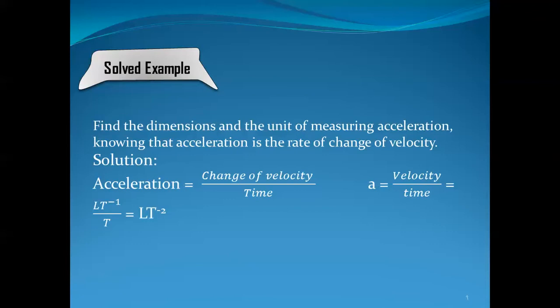Velocity equals displacement over time. Displacement has dimension L and time has dimension T, so the dimension of velocity is L·T to the power negative one — meaning length over time.